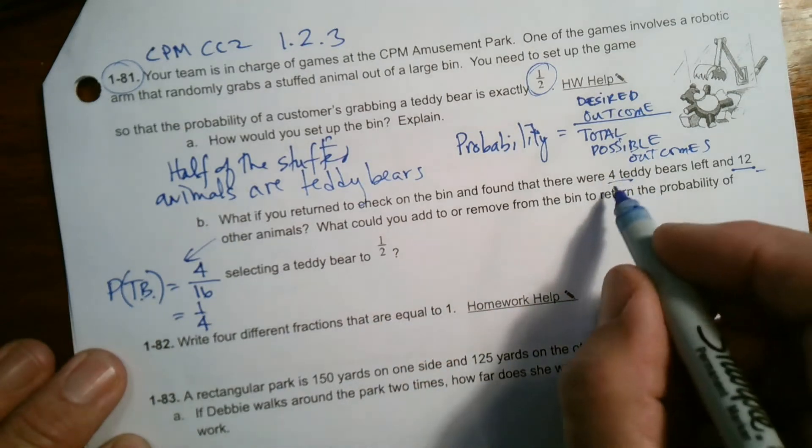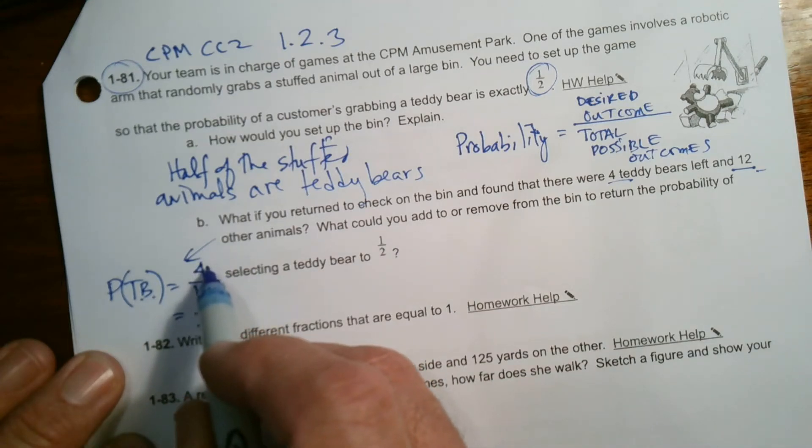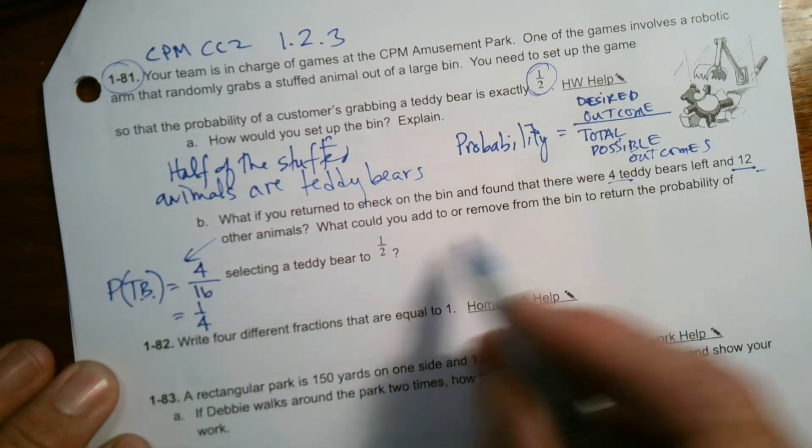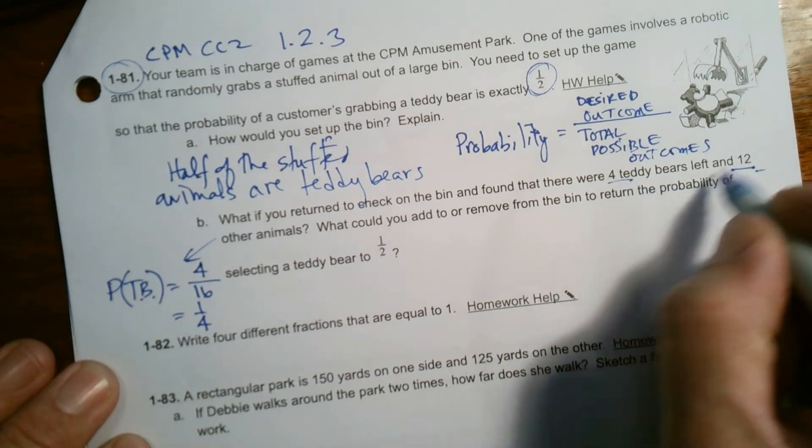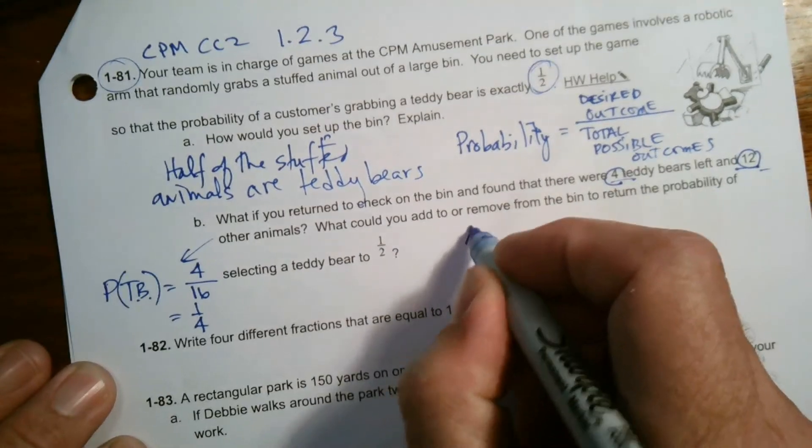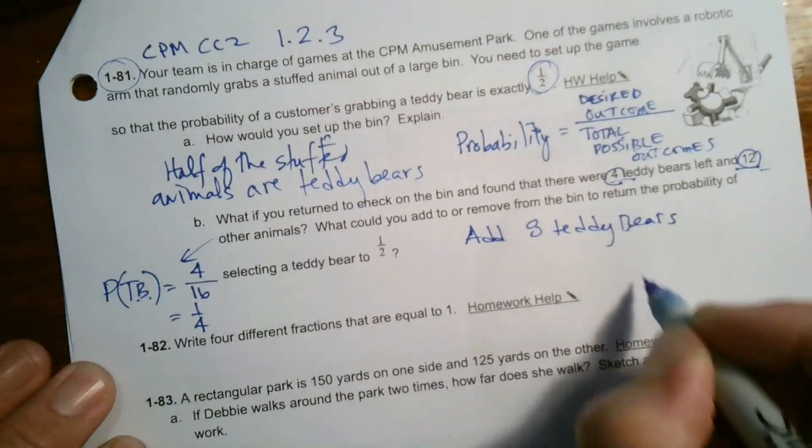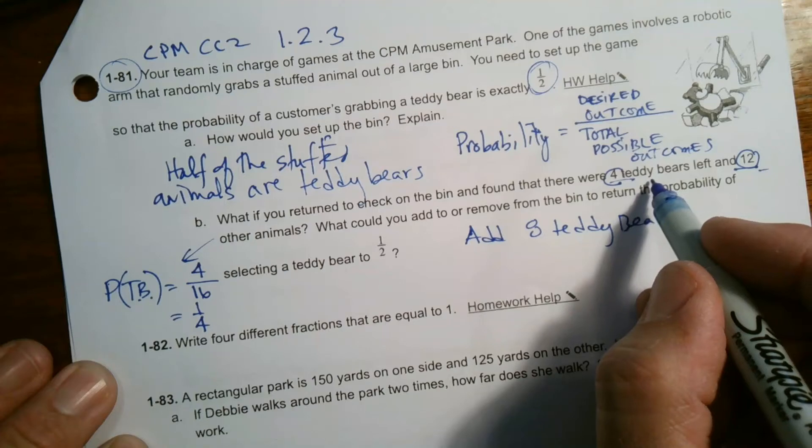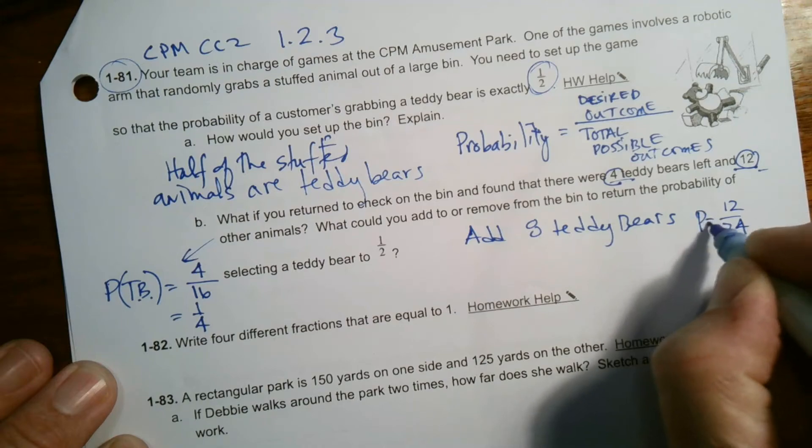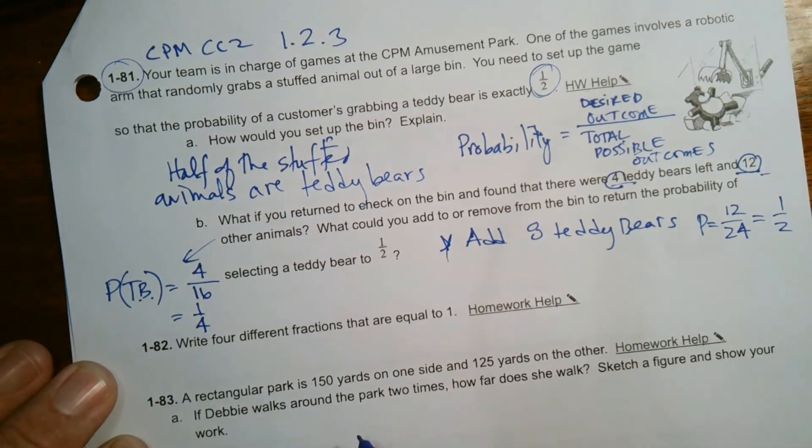So if I were to add just four teddy bears, somebody may say that would work. That would make that eight, but then that changes the total to 20. So we need to make sure it's still half. Another way of looking at it is an equal amount of teddy bears to other animals. So what we could do is add eight teddy bears. Because then there would be 12 teddy bears and 12 other animals, so it would be 12 over 24, and 12 over 24 is one-half. So one of the options is add eight teddy bears.